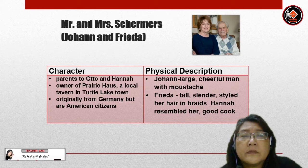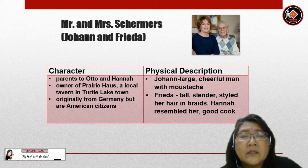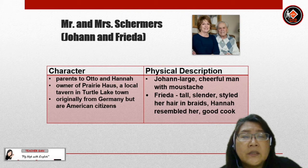Physical description: Johan is a large, cheerful man with a moustache. Frida is tall and slender — she styles her hair in braids. Hannah resembles her mother and is a good cook.